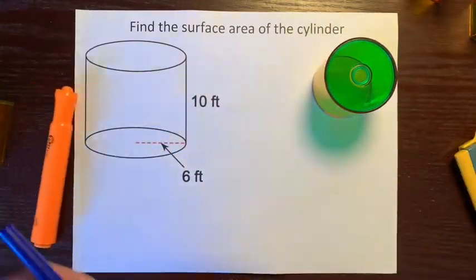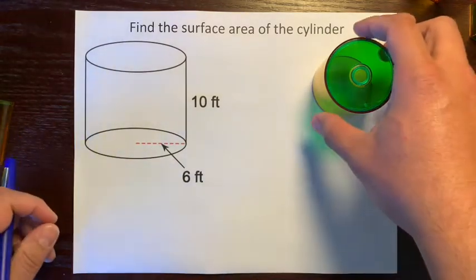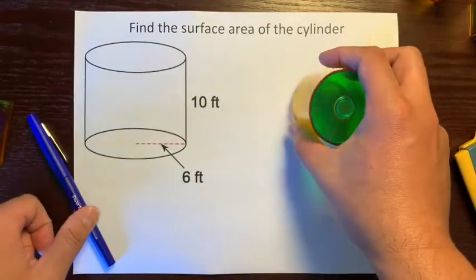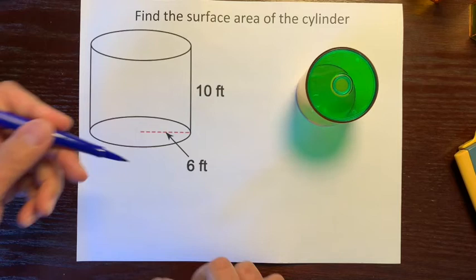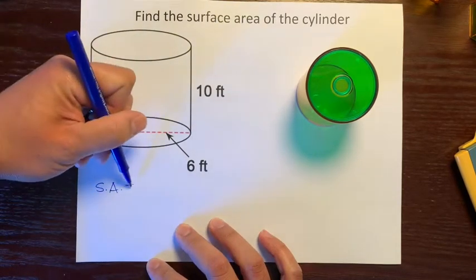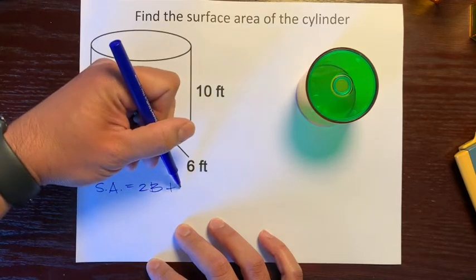We're still going to use the formula for the surface area of a prism because it has two congruent bases that are parallel to each other. The formula for the surface area of a prism and a cylinder is 2B plus PH.